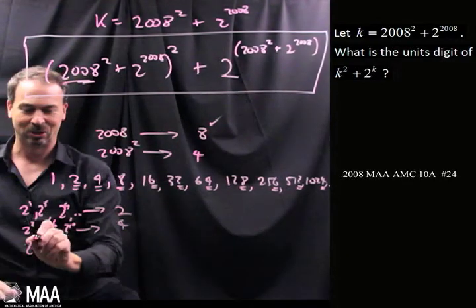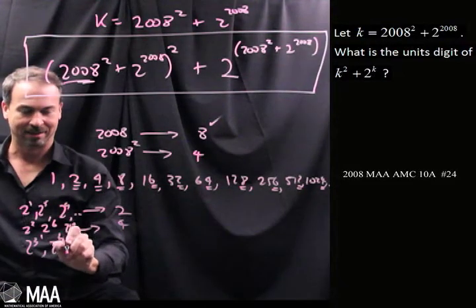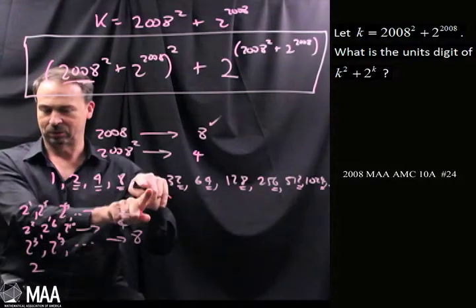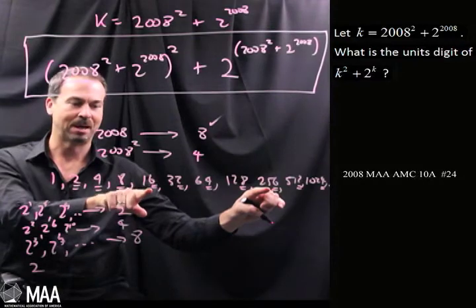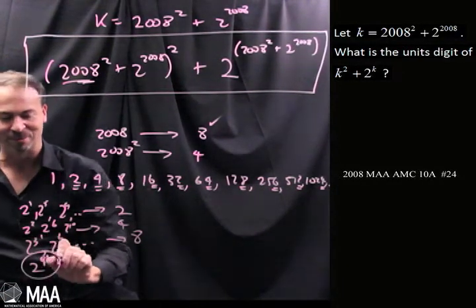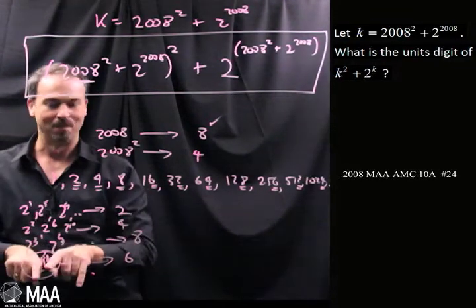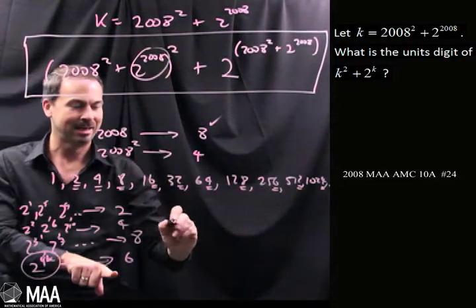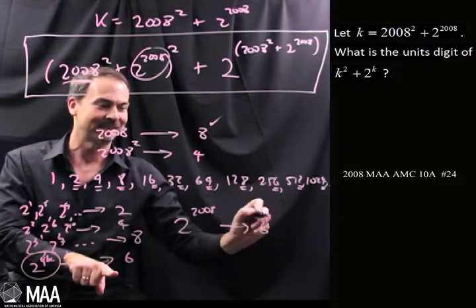2 cubed ends in an 8, 2 to the 7th ends in an 8 — they all end in an 8. And 2 to the multiples of 4 all end in a 6. This one here is 2 to the 2008 — that's a multiple of 4 — so it's going to end in a 6. I'm getting there.